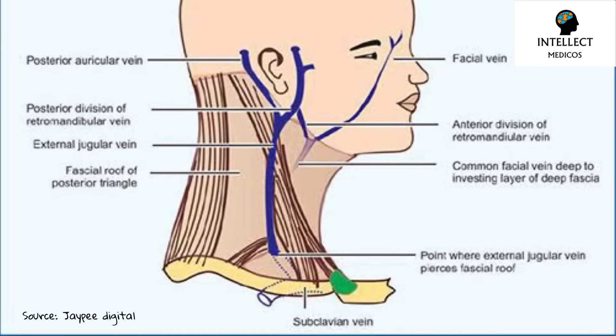As you can see in this diagram, the retromandibular vein combines with the posterior auricular vein to form the EJV. This runs obliquely in the neck and drains into the subclavian vein. The EJV runs anterior and superficial to the sternocleidomastoid — it is superficial in the skin.